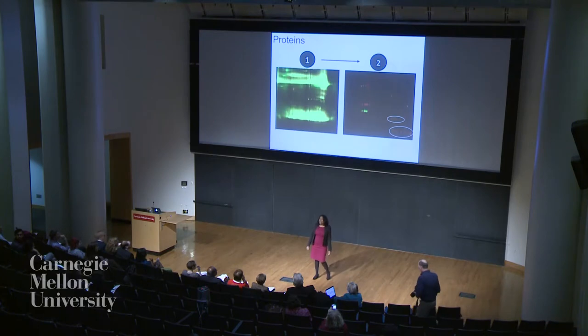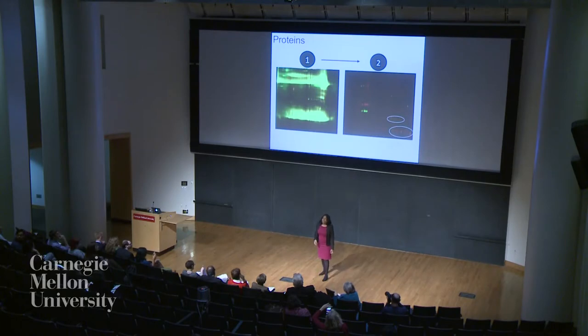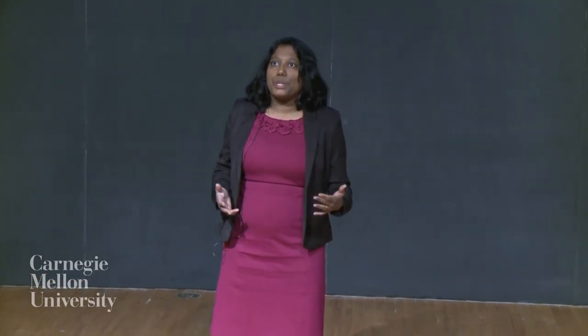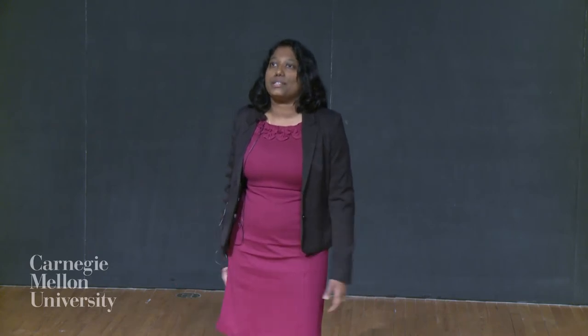Our immune system protects us from infections by producing proteins called antibodies. Antibodies flag viruses and bacteria in order to attack them. In some people, the immune system gets confused due to a variety of factors and starts producing antibodies that attack the individual's own body parts. This is called an autoimmune disease.